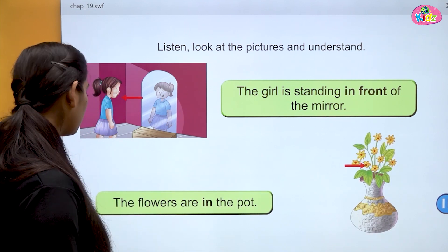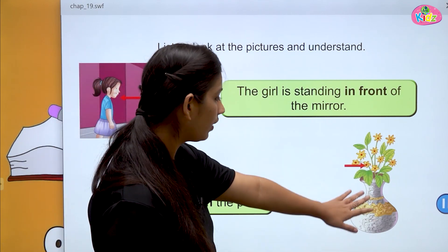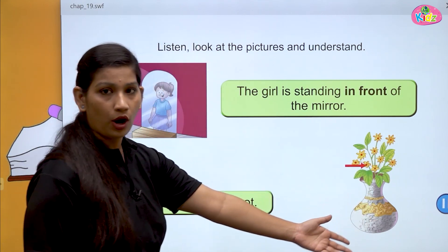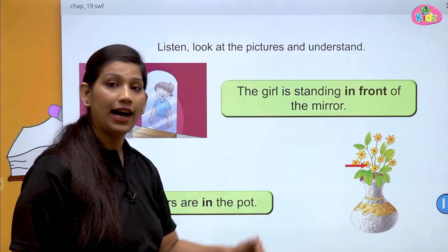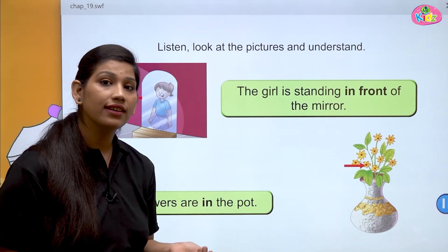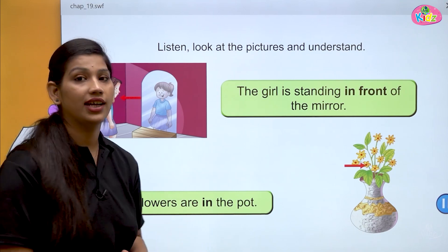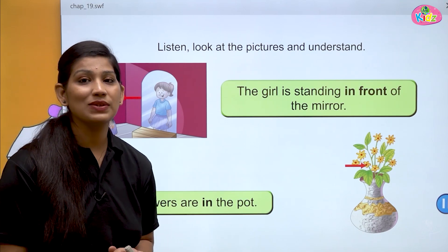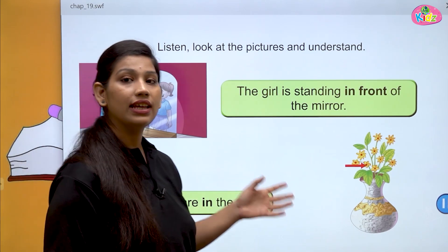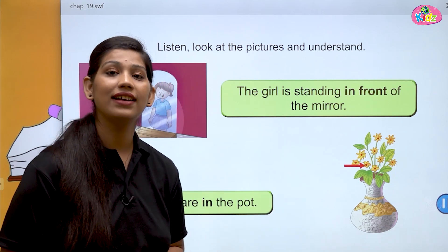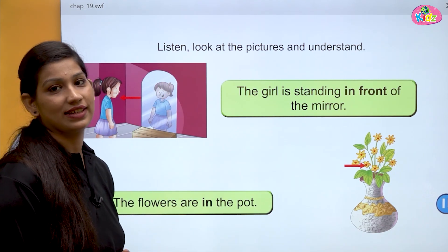Here you can see the vase and the flowers — pot hai aur flowers hain. Jo flowers hain wo pot ke andar hain. Toh andar ke liye hum use karte hain: in. The flowers are in the pot. Andar ke liye hum 'in' ka use karte hain.